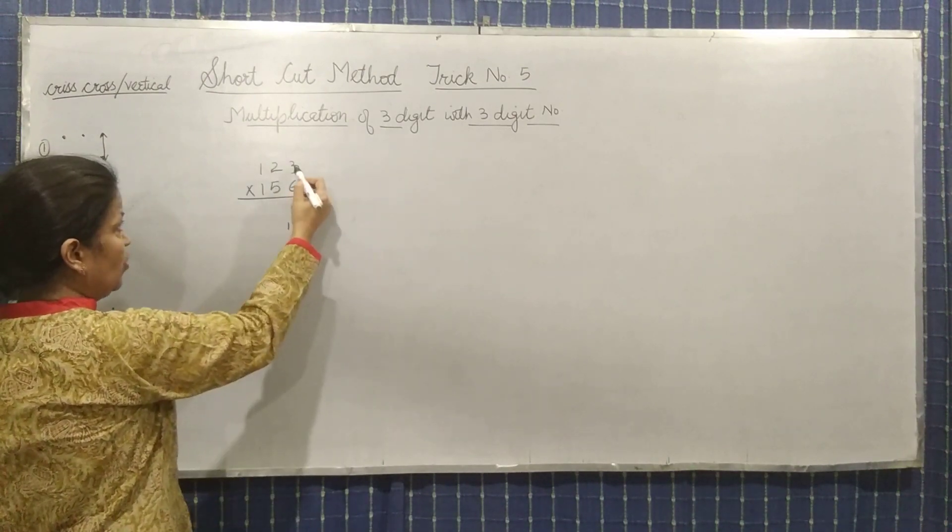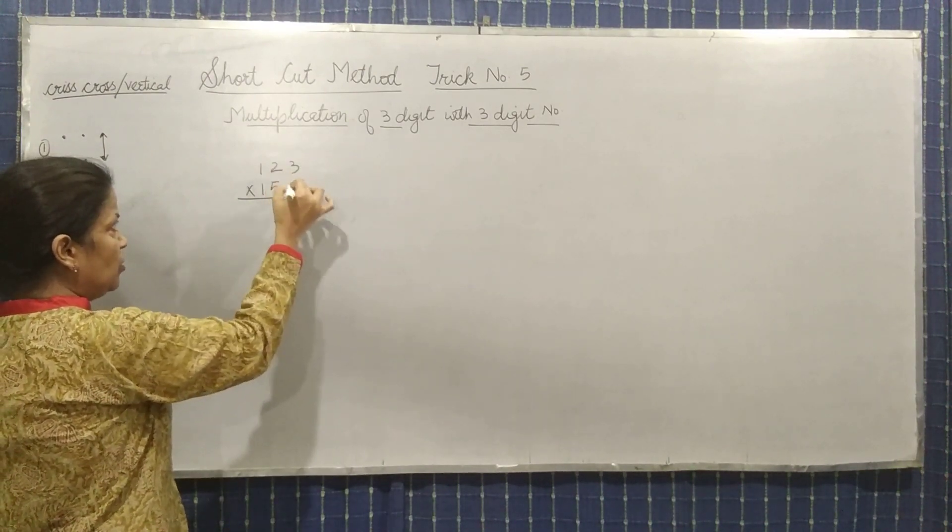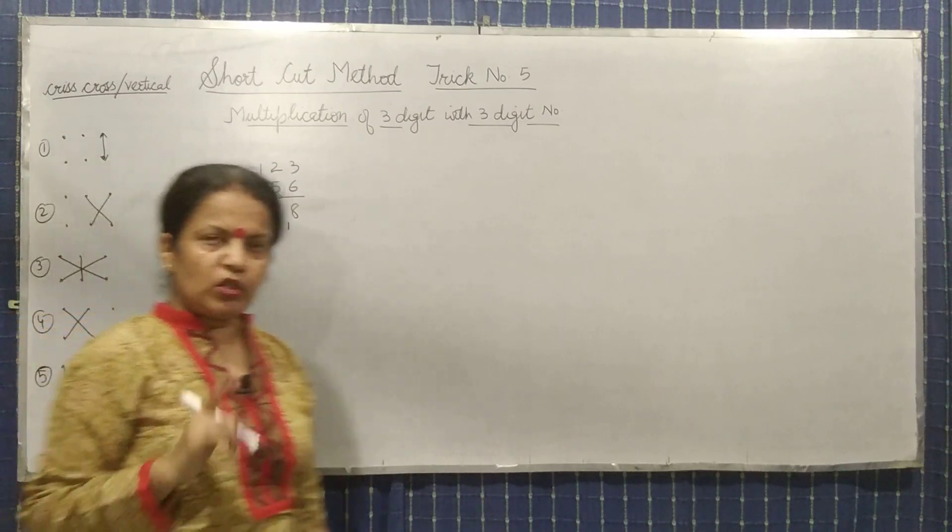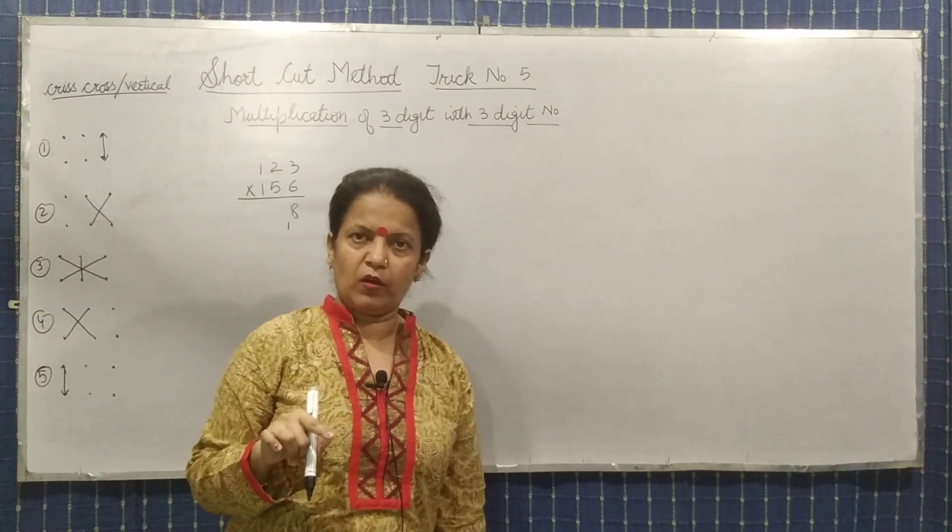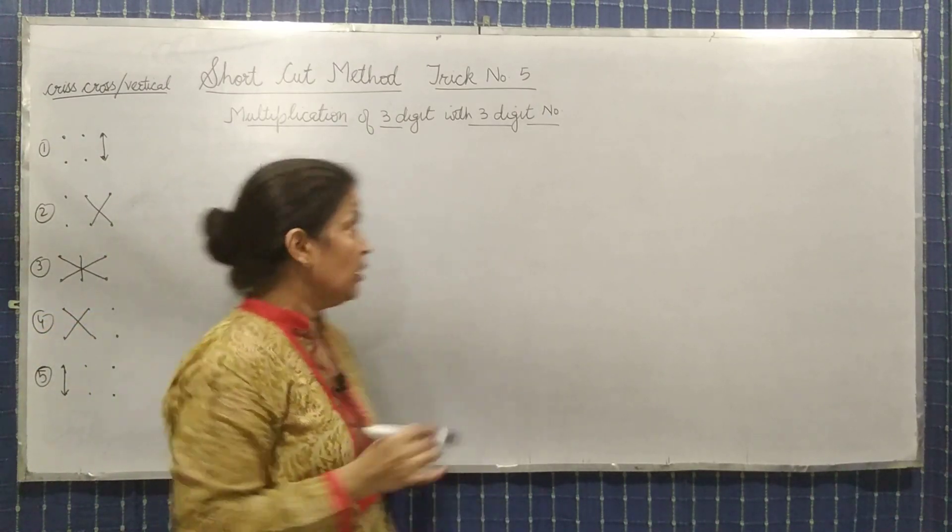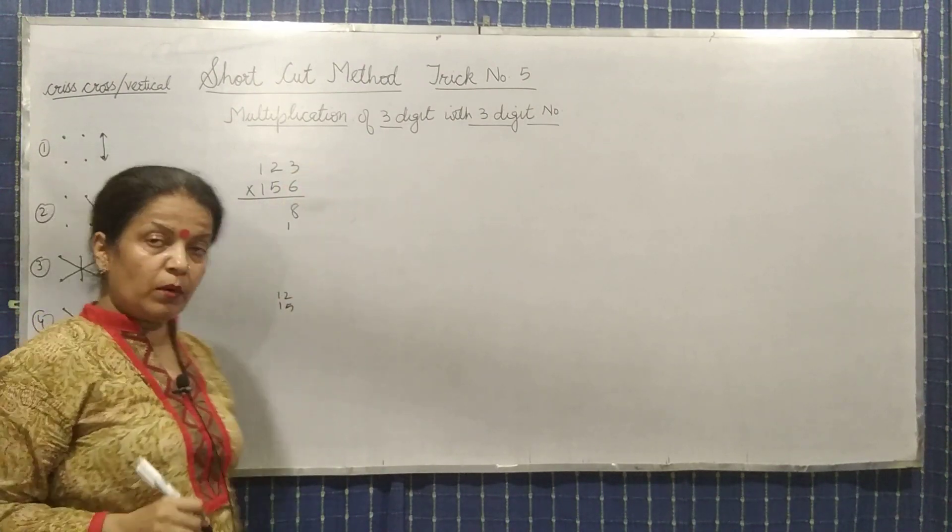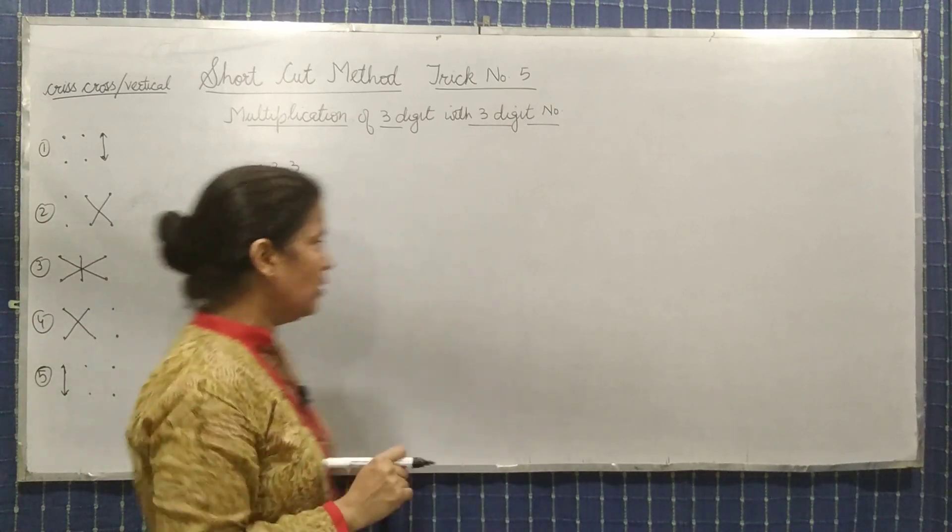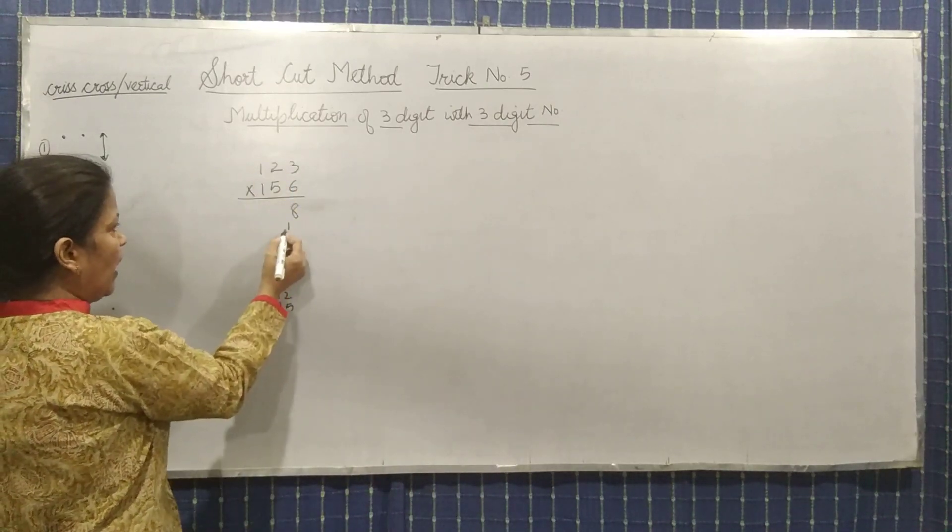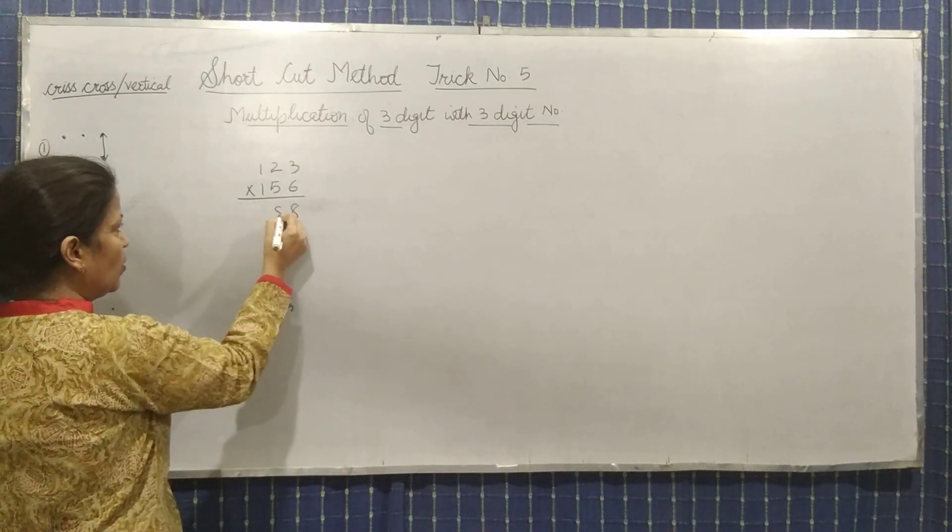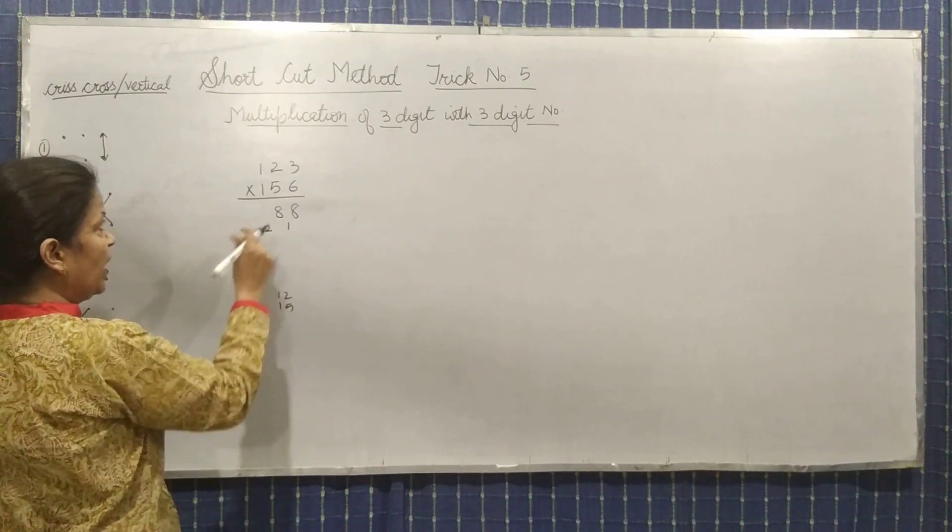Now second step, multiply these two and after multiplying, you will add it. Five into three is fifteen, two into six is twelve. Twelve plus fifteen - you'll add this verbally - it will be twenty-seven and one carry, so it will be twenty-eight, two carry.